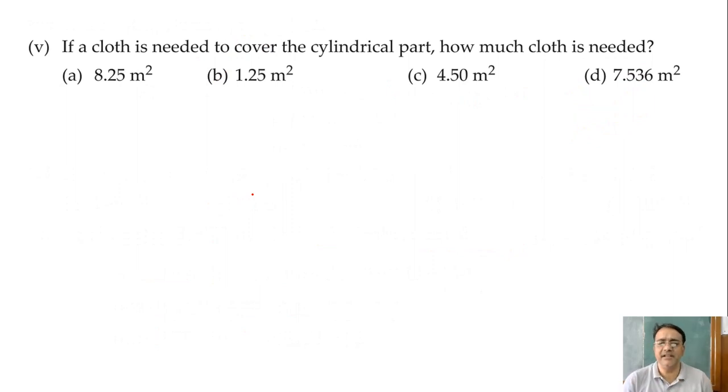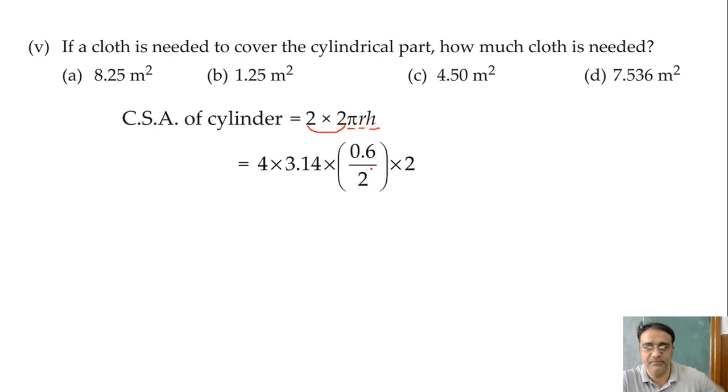So that means only lateral surface area, curved surface area we have to take. So what is the curved surface area of cylinder? 2πrh. Okay. So two cylinders are there so 2 into 2πrh. So this will become 4, 3.14, 0.6 by 2 and this is 2. So this 2 cancels and if you multiply this we get 7.536. So the last option is the correct answer. So any doubt in this question?